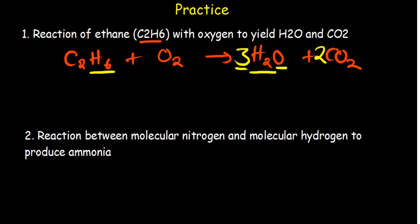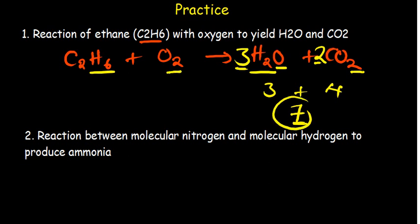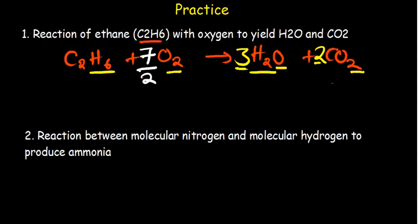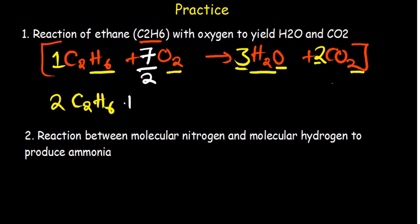Now balance oxygen. On the right: 3×1=3 from water and 2×2=4 from CO₂, giving 7 oxygen atoms total. On the left we only have 2. Since 7 is odd, we use the fraction 7/2 as the coefficient for O₂ — the two cancels, leaving 7 oxygen atoms on the left. We can't leave the answer in fraction form, so we must multiply the entire equation by 2.